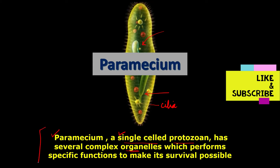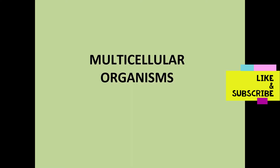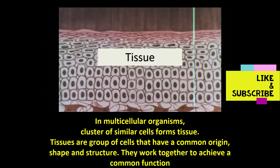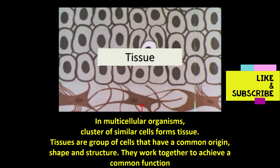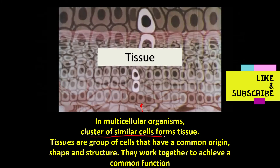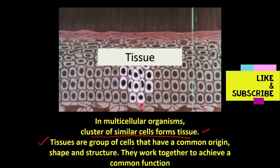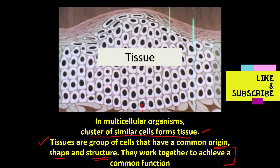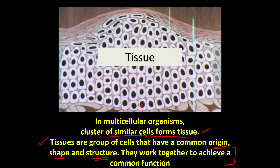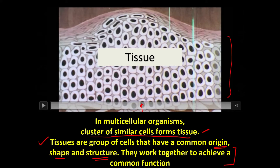Paramecium, being a single-celled organism, performs various important functions with the help of this single cell. Moving on to multicellular organisms — they are composed of more than one cell. In multicellular organisms, a cluster of similar cells forms the tissue. Tissues are groups of cells with a common origin, common shape and structure, and they work together to perform a common function. Various specialized cells are present which collectively support the organism.